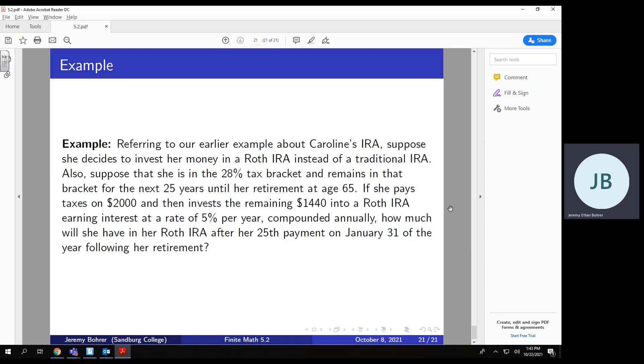If she pays taxes on $2,000 and then invests the remaining $1,440 into a Roth IRA, earning interest at a rate of 5% per year, compounded annually, how much will she have in her Roth IRA after her 25th payment on January 31st of the year following her retirement?